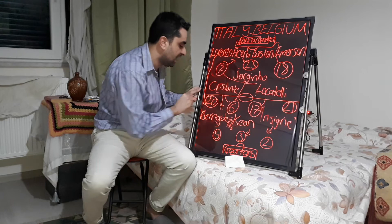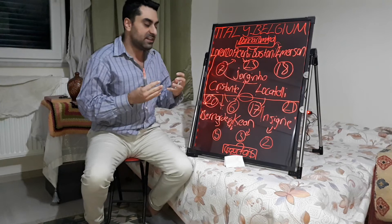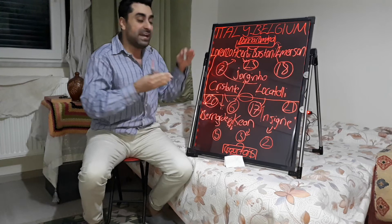The game finished 2-1 and Italy deserved to win in the UEFA Nations League. That is all my analysis and comments on the Italy versus Belgium game.